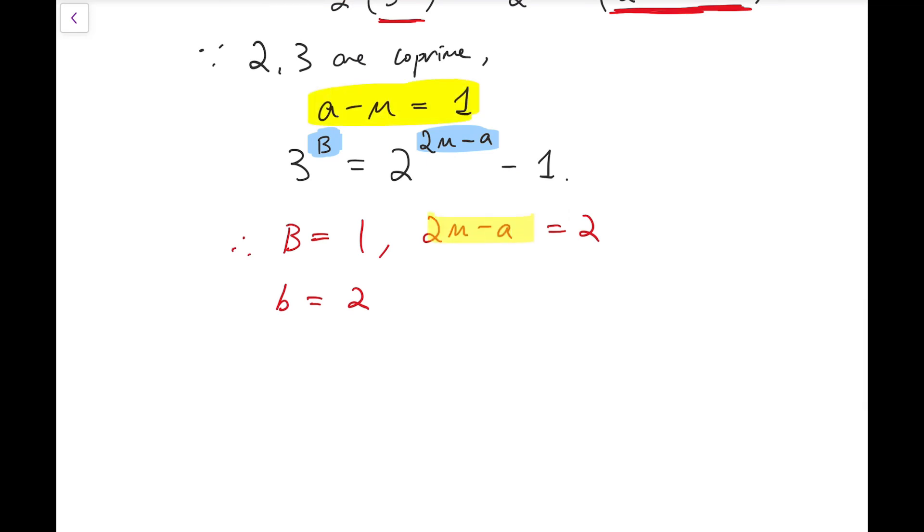And over here we have a minus m equals 1 and 2m minus a equals 2. So we can solve that. So by solving them, we know that m equals 3.